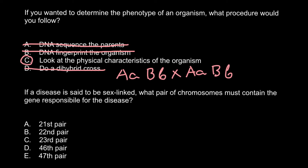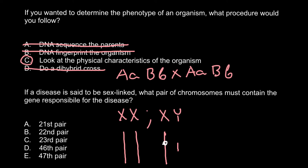In females, the 23rd pair is XX chromosomes; in males, it is X and Y chromosomes. The X chromosome is much bigger than the Y chromosome. X chromosome contains more than 2,000 genes, while the Y chromosome has under 200 genes. These two chromosomes have homologous fragments and can line up during mitosis or meiosis, despite being very different in size and composition.